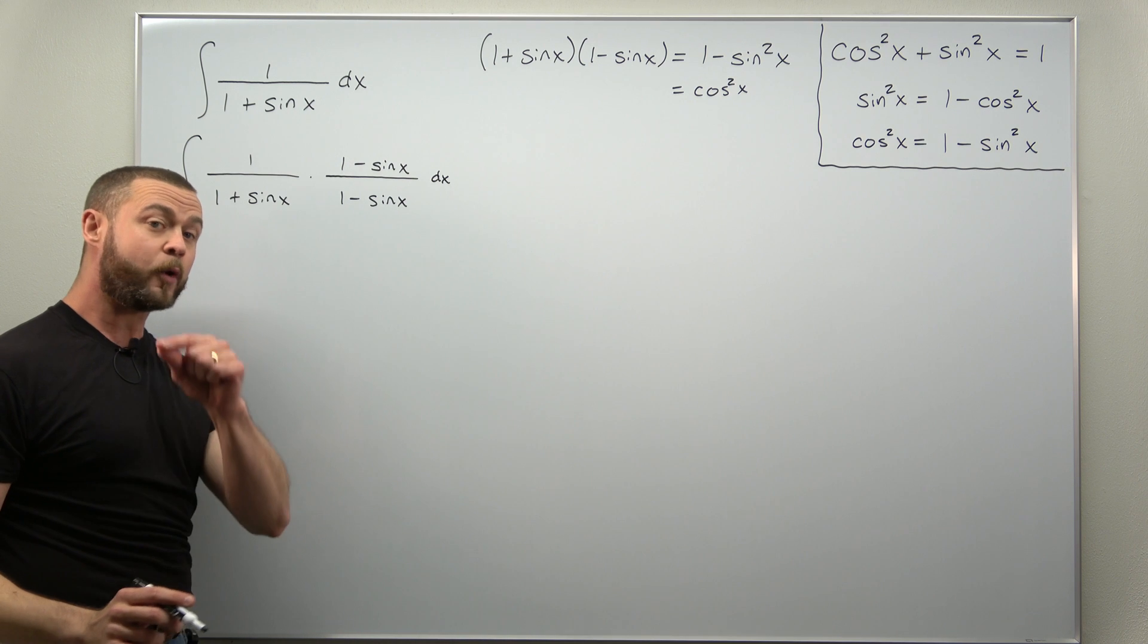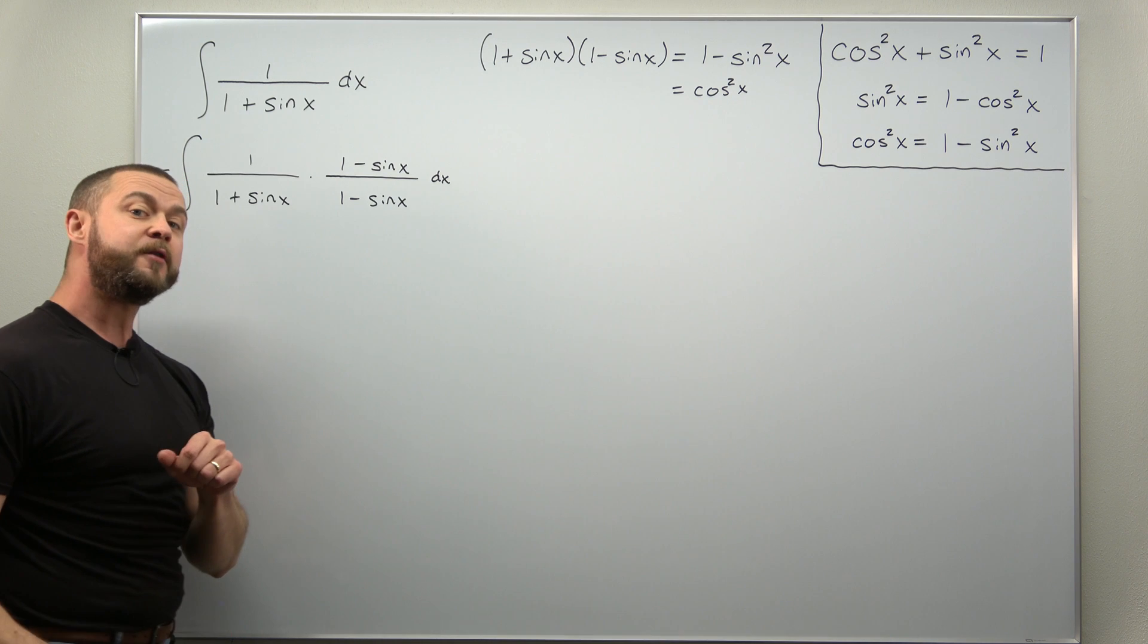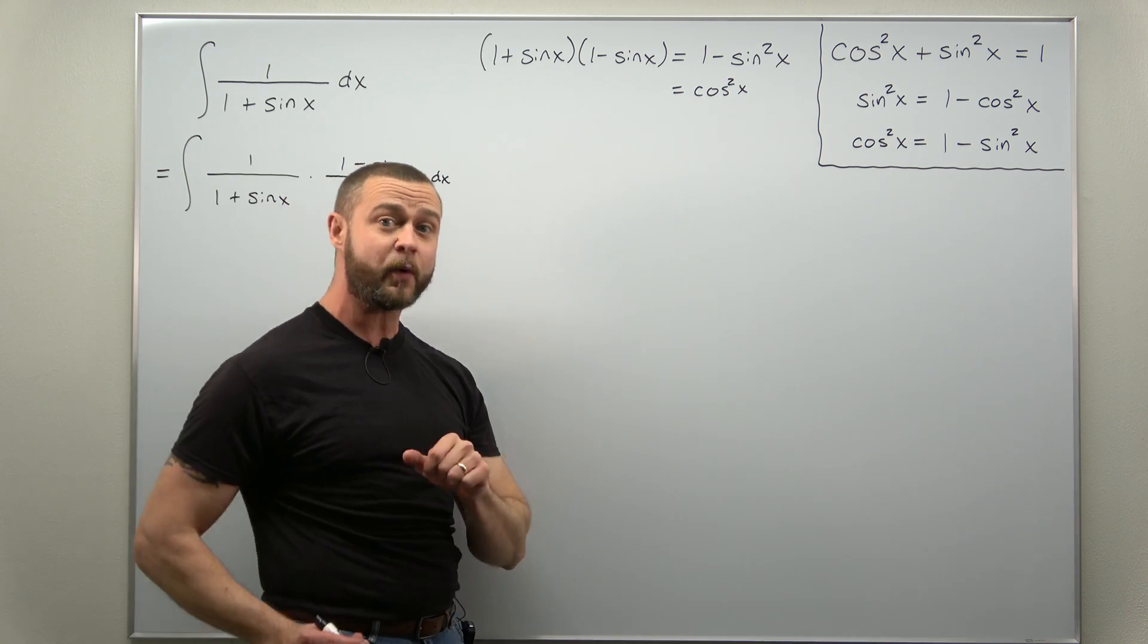And from here we're going to multiply these denominators. We already kind of worked that out up here. We can rewrite 1 minus sine squared of x from your Pythagorean identity as cosine squared of x.